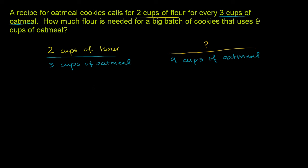That's what they're asking us. If we're going from three cups of oatmeal to nine cups of oatmeal, how much more oatmeal are we using? Well, we're using three times more oatmeal — we're multiplying by three. Three cups of oatmeal to nine cups of oatmeal, we're using three times the oatmeal. So if we want to use flour in the same proportion, we have to use three times the flour — multiply the flour times three.